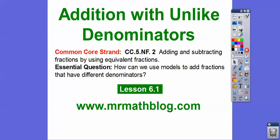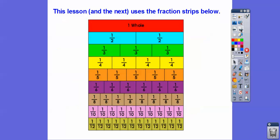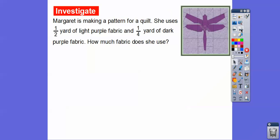So here's our common core strand. Our essential question is: how can we use models to add fractions that have different denominators? In this lesson, we're going to be using fraction strips. Here's one whole. If we cut it up into two equal parts, there's one half. If we cut up one whole into three equal parts, those are one third. Four equal parts gets us one fourth, all the way down to one twelfth. There are 12 one-twelfths that make up one whole.